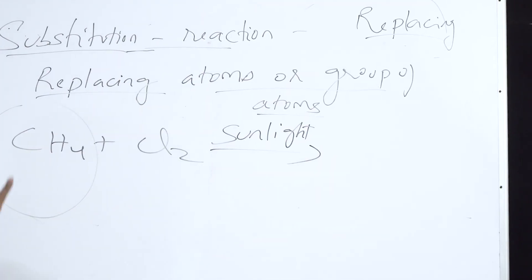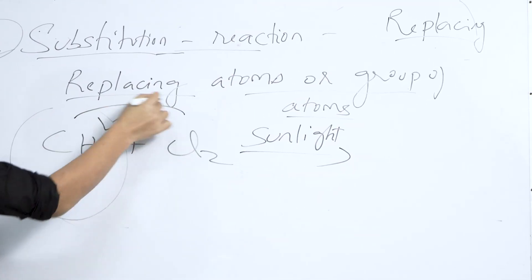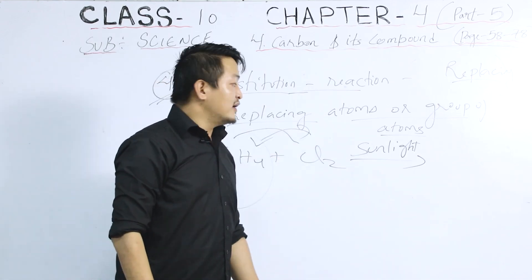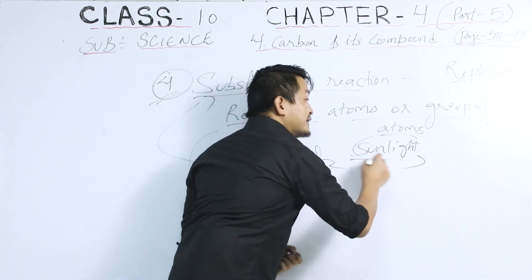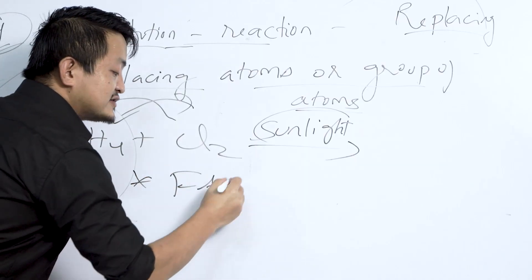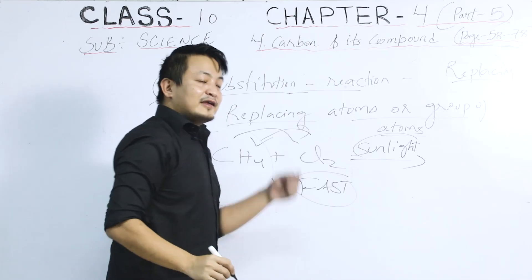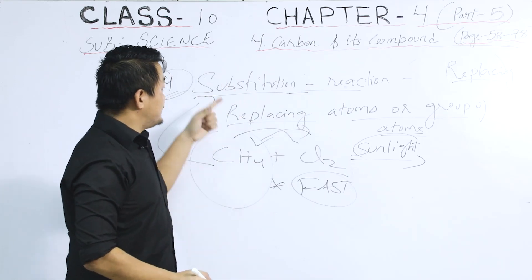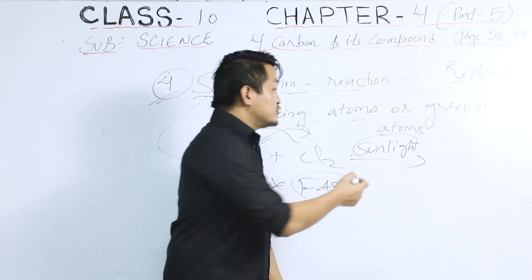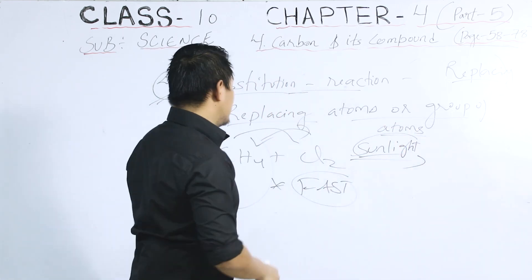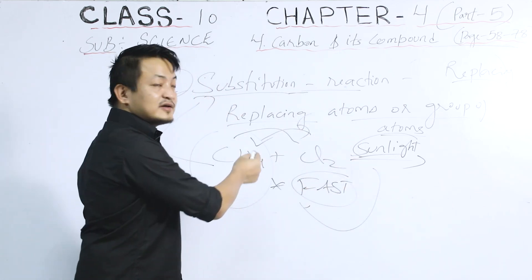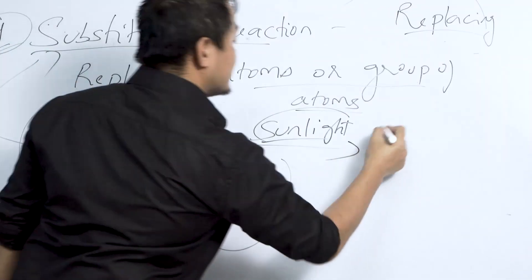Here, the replacing — the exchange — will take place, and that is why we call it a substitution reaction. With the help of sunlight we are able to do this reaction, and this reaction is very fast. Note that in the previous chemical properties we used a catalyst, but here we are using sunlight to get the product.